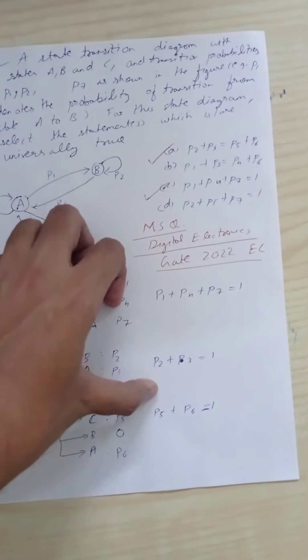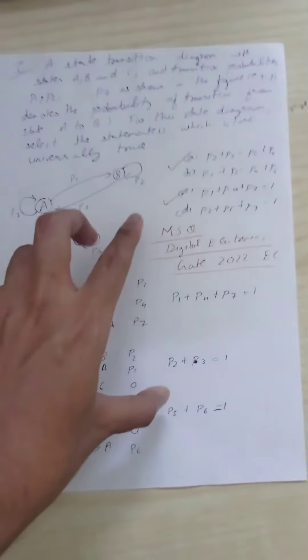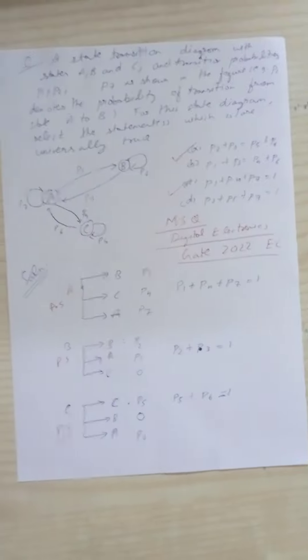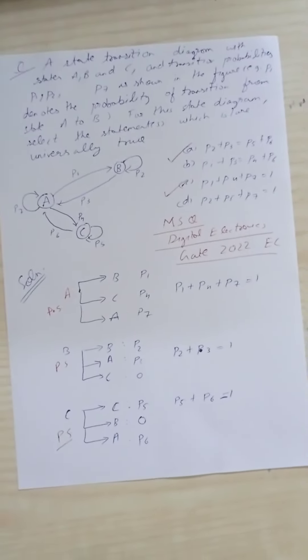P2 + P3 = P5 + P6, so statement A is also correct. Statement A and statement C are correct.